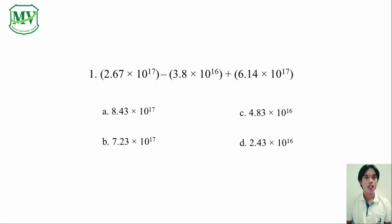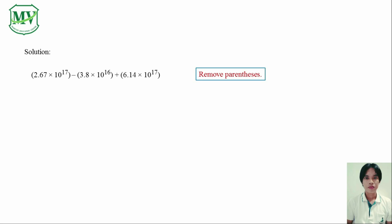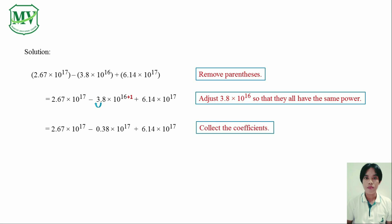Well, we can't be sure until we do the solution. First thing we need to do is to remove the parentheses. Now, notice that one of our exponential notations has a power different from the others. We have to adjust that notation so that it has the same power as the others. Now that they all have the same power, it's time to collect the coefficients.